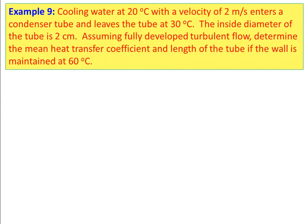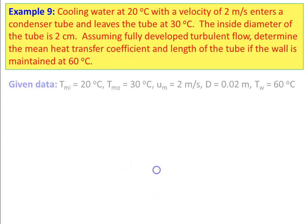Example number 9: Cooling water at 20°C with a velocity of 2 m/s enters a condenser tube and leaves at 30°C. The inside diameter of the tube is 2 cm. Assuming fully developed turbulent flow, determine the mean heat transfer coefficient and length of the tube if the wall is maintained at 60°C. Given: inlet temperature 20°C, outlet temperature 30°C, mean velocity 2 m/s, diameter 0.02 m, wall temperature 60°C.